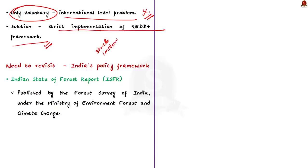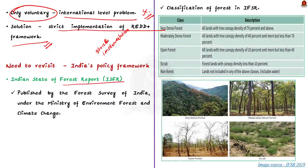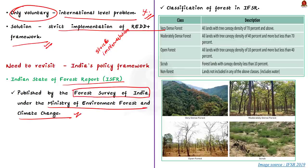Now let us discuss why India needs to revisit its policy framework. We need to understand the issue in the existing policy, so let us look at some data from the Indian State of Forest Report, published by the Forest Survey of India under the Ministry of Environment, Forest and Climate Change. Forests in India are classified into dense forest, moderately dense forest, open forest, scrub, and non-forest.